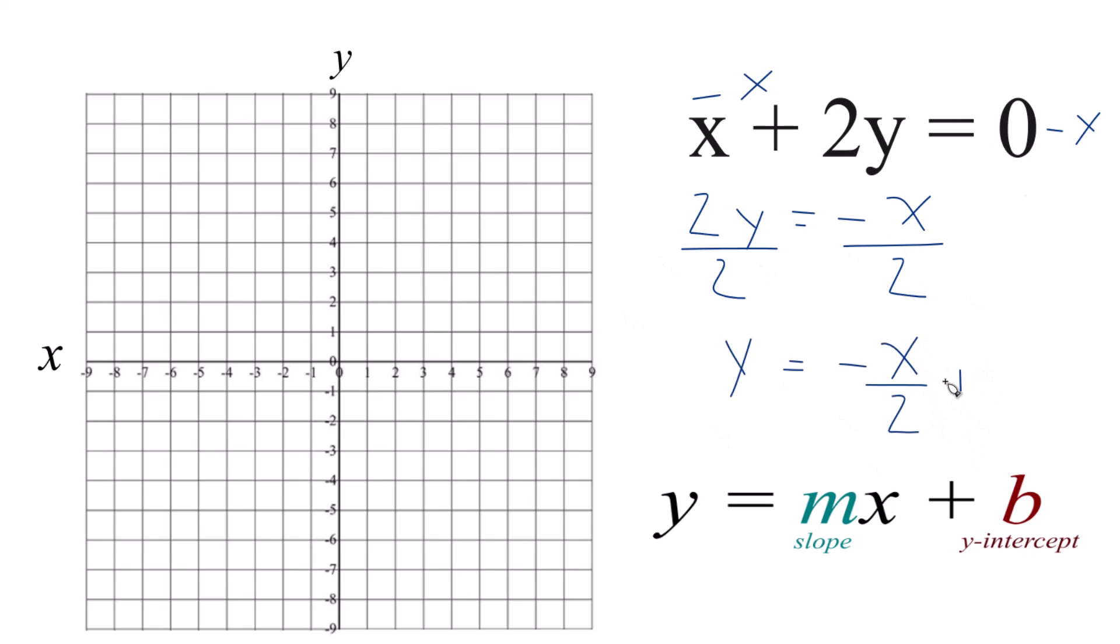We could just say plus 0 here since we don't have a y-intercept. And let's think of this as negative 1x over 2. So when we go to graph this, we don't have the y-intercept, or we should say the y-intercept is 0.